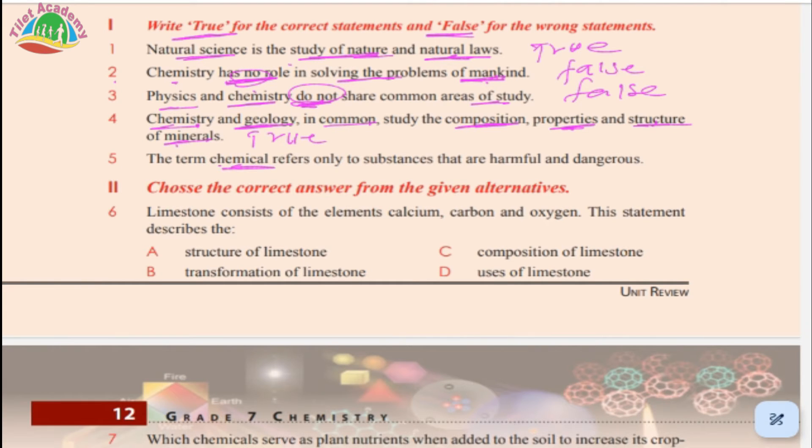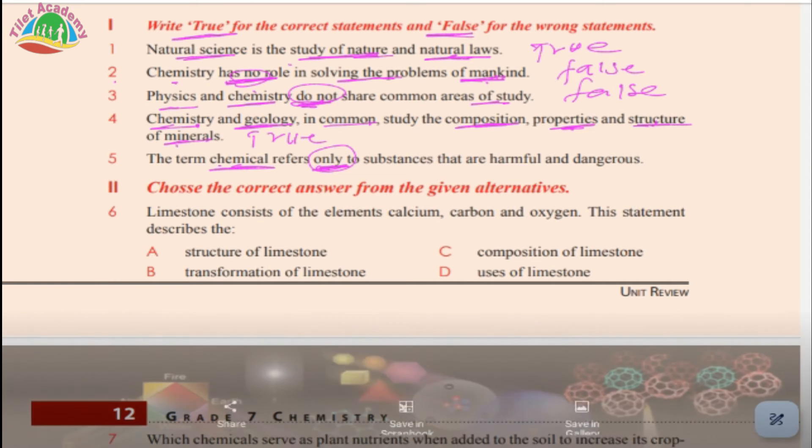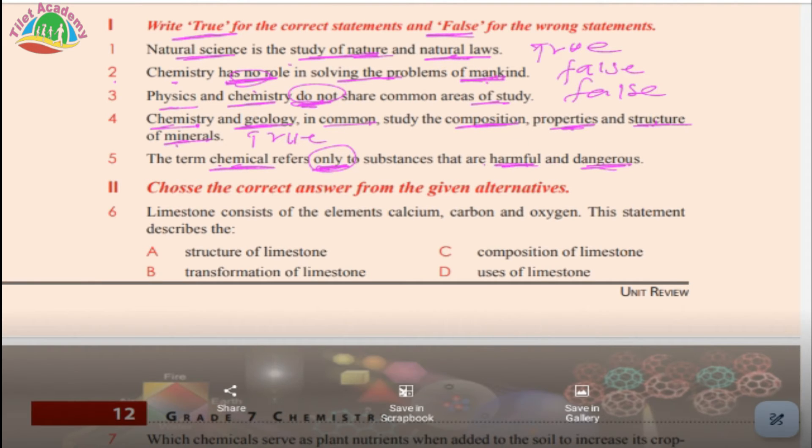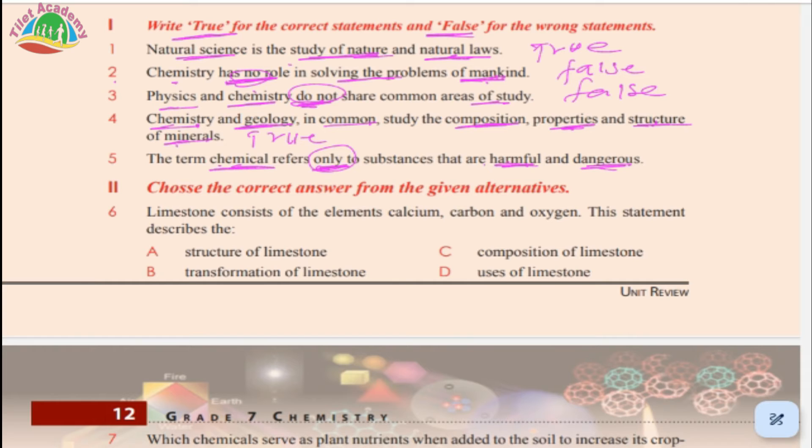Number five: The term chemical refers only to substances that are harmful or dangerous. We learned in unit one that chemical doesn't mean only harmful or dangerous - all substances are chemicals. That's false. Now choose the correct answer from the given alternatives.